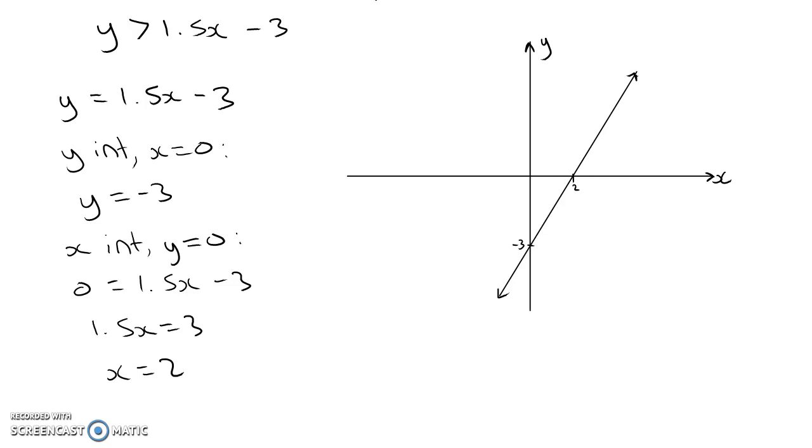The next step we want to do in representing a half plane is to shade a region either side of this line. And in order to figure out which side we're going to shade, we'll test the coordinates 0, 0, our origin.